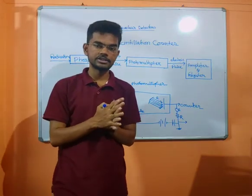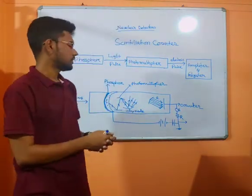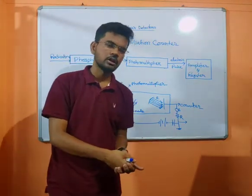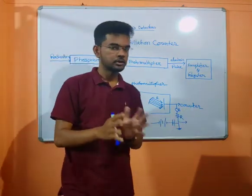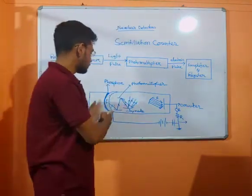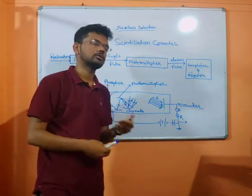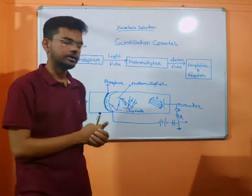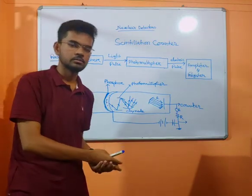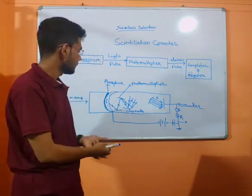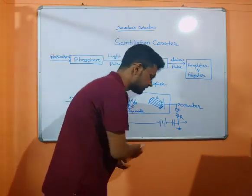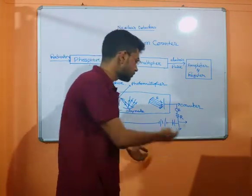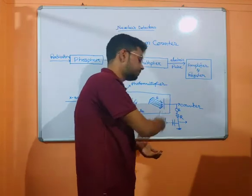That is a basic scintillation counter. In the basic structure, there is a photosensitive cathode and phosphor. The incident radiation — alpha radiation, X-ray, and beta radiation — hits the phosphor. The photosensitive cathode is connected with a high potential difference.